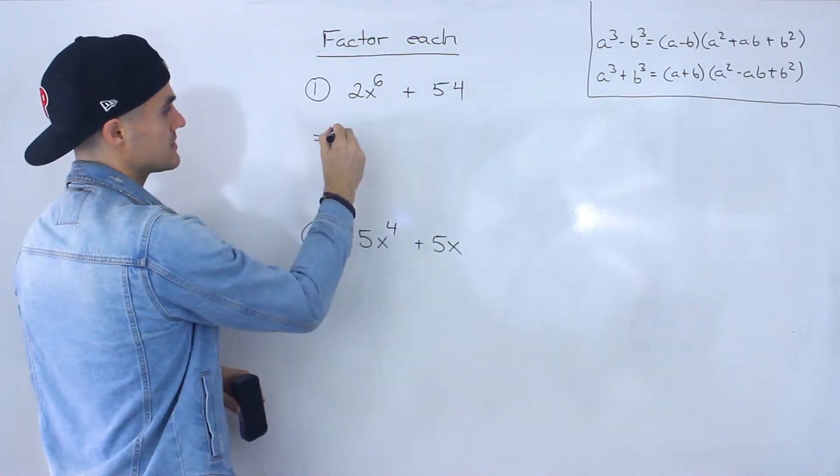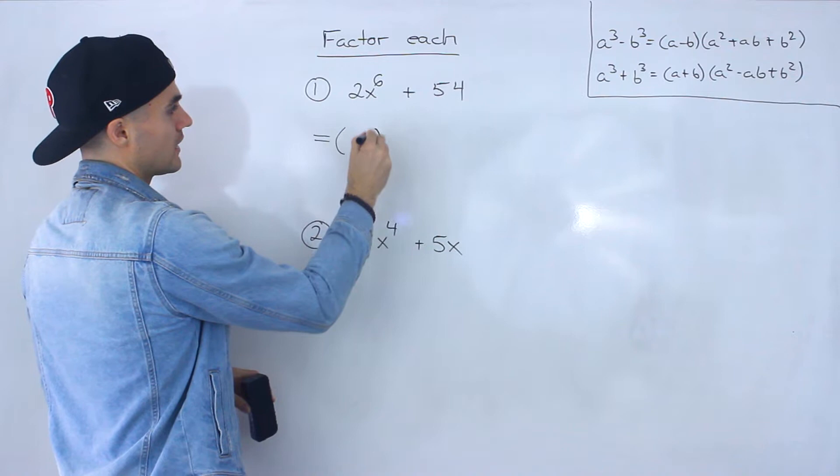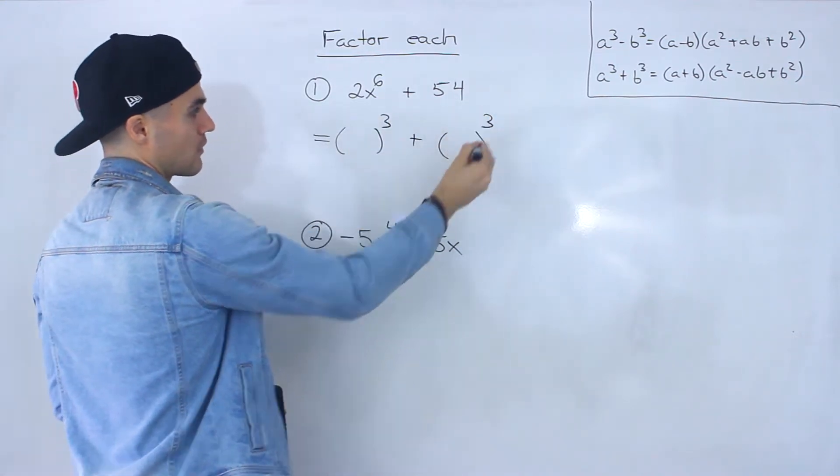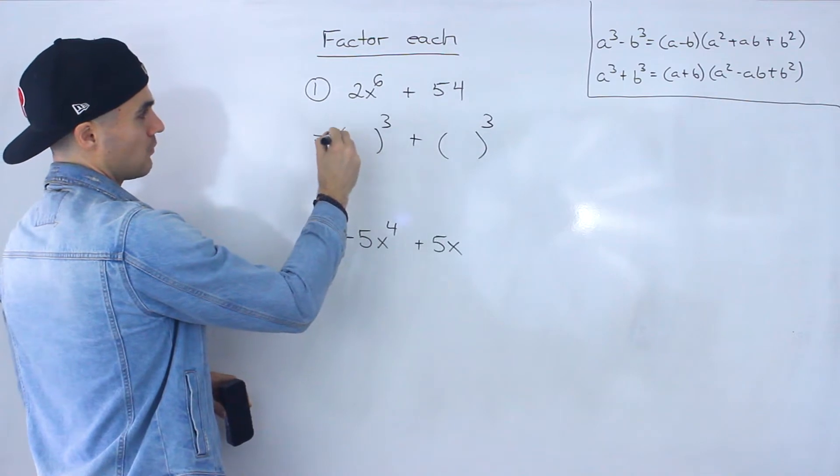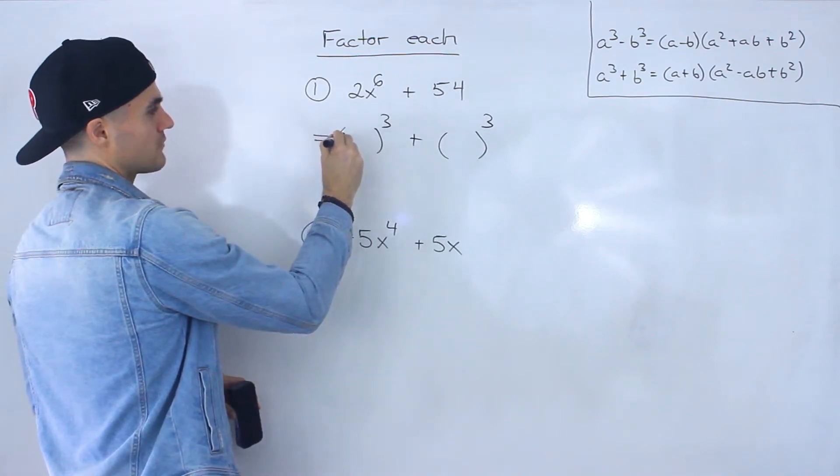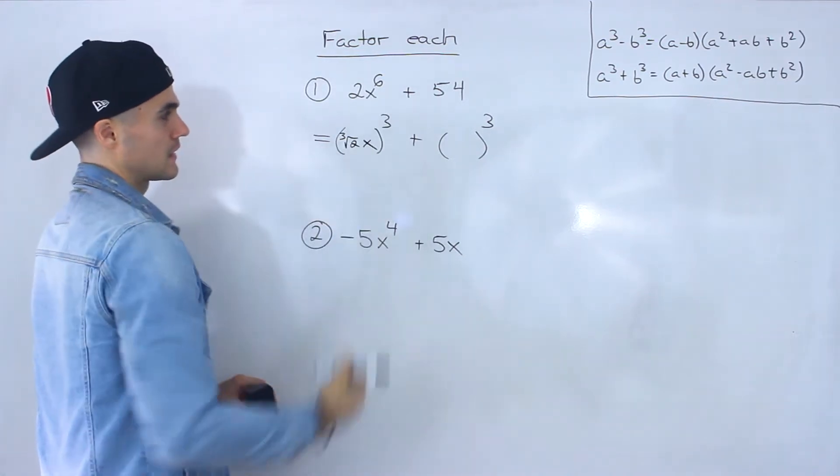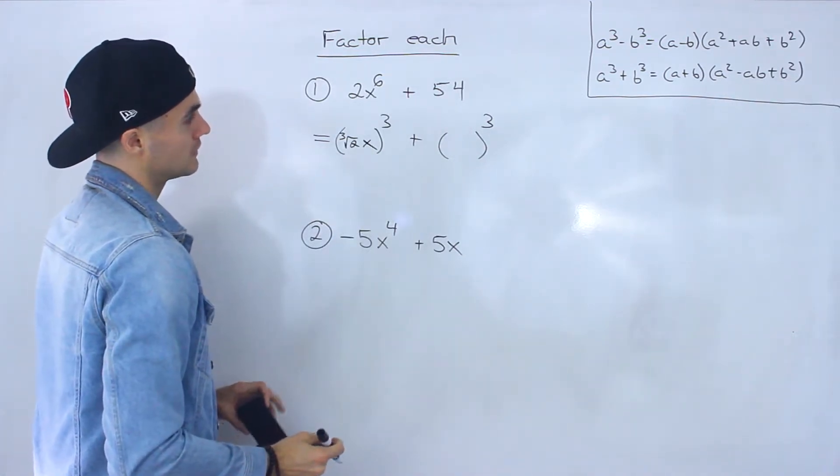It's hard to take this and rewrite it as something to the power of 3. What we would have to end up doing is we'd have to have like the third root of 2 times x. But then we're dealing with this third root of 2. It's just going to make everything ugly.